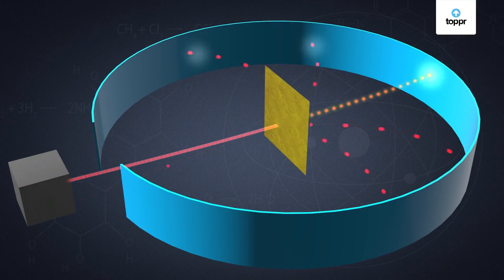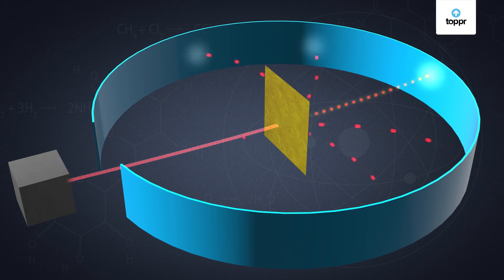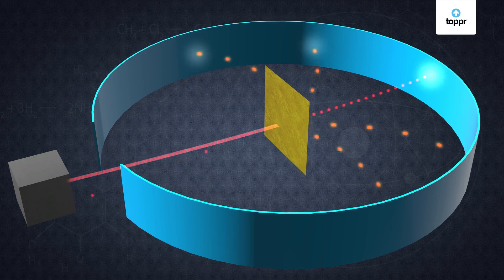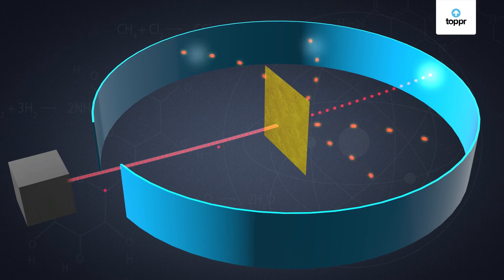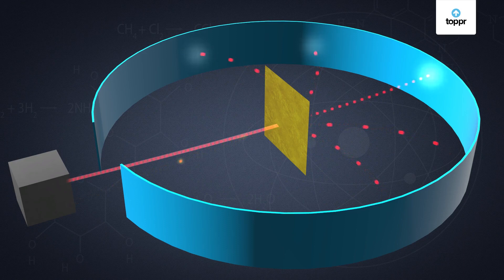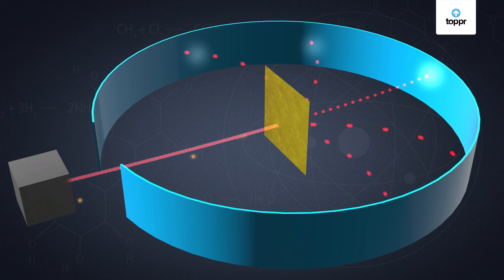Most of the alpha particles pass straight through the gold foil. Some alpha particles changed their path slightly. Surprisingly, one out of every 12,000 alpha particles appeared to rebound.